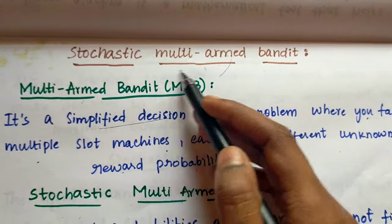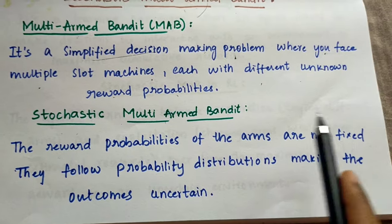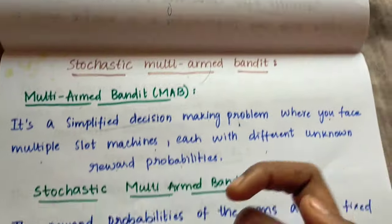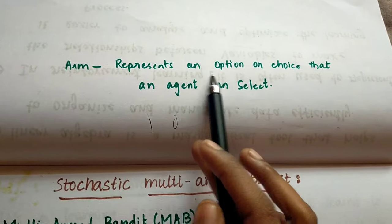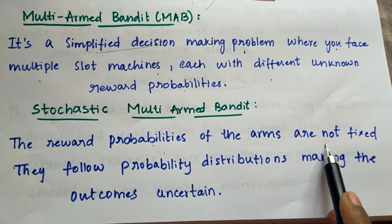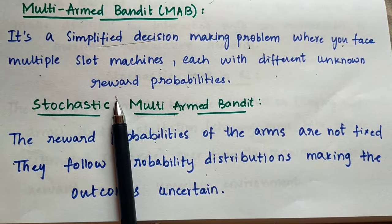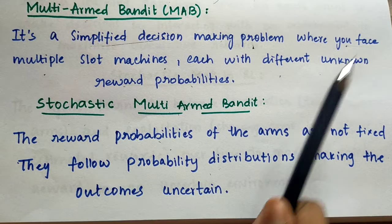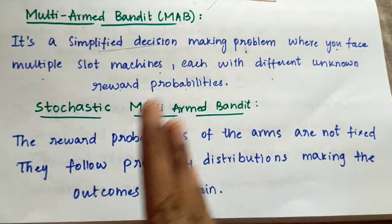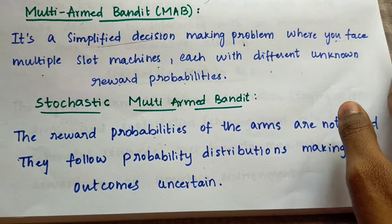Now we saw what is multi-armed bandit. In stochastic multi-armed bandit, the reward probabilities of the arms are not fixed. An arm represents an option or choice that an agent can select, and the rewards are not fixed — they follow probability distributions, making the outcomes uncertain. Sometimes they can give you a reward, sometimes they might not.